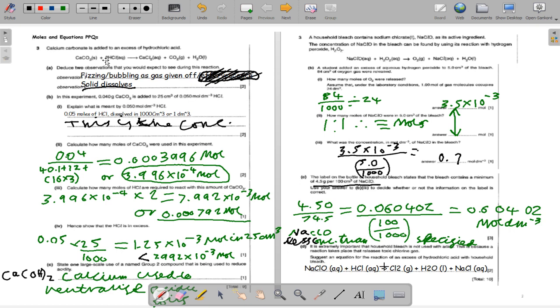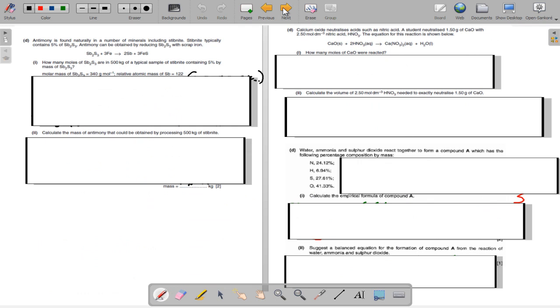Antimony is found naturally in a number of minerals including Stibnite. Stibnite typically contains 5% of SB2S3, and SB2S3 plus 3 moles of iron equals 2SB plus 3 moles of iron sulfide. We need to work out the moles of SB2S3 in 500 kilograms containing 5% by mass of SB2S3. You are given the molar mass, 340 grams per mole for SB2S3, and the relative atomic mass of SB is 122. We need to calculate the mass of antimony that can be obtained by processing 500 kilograms of Stibnite.